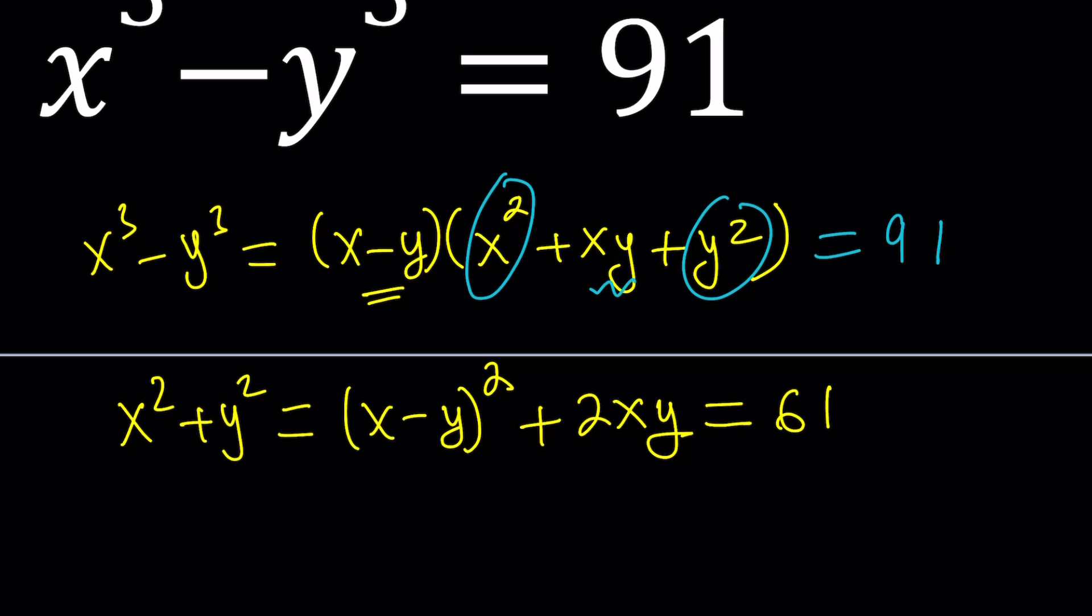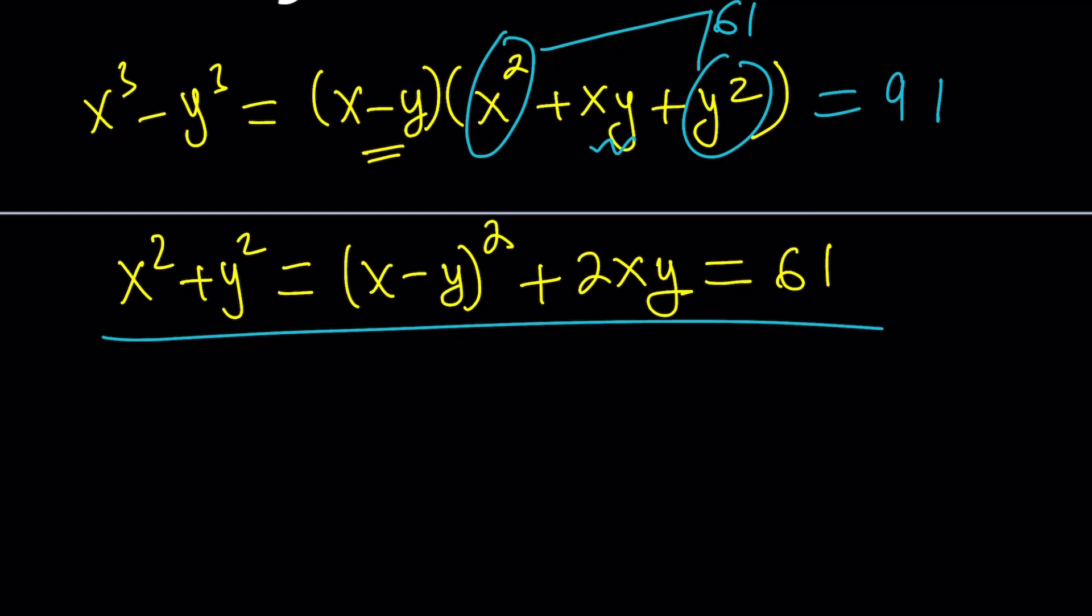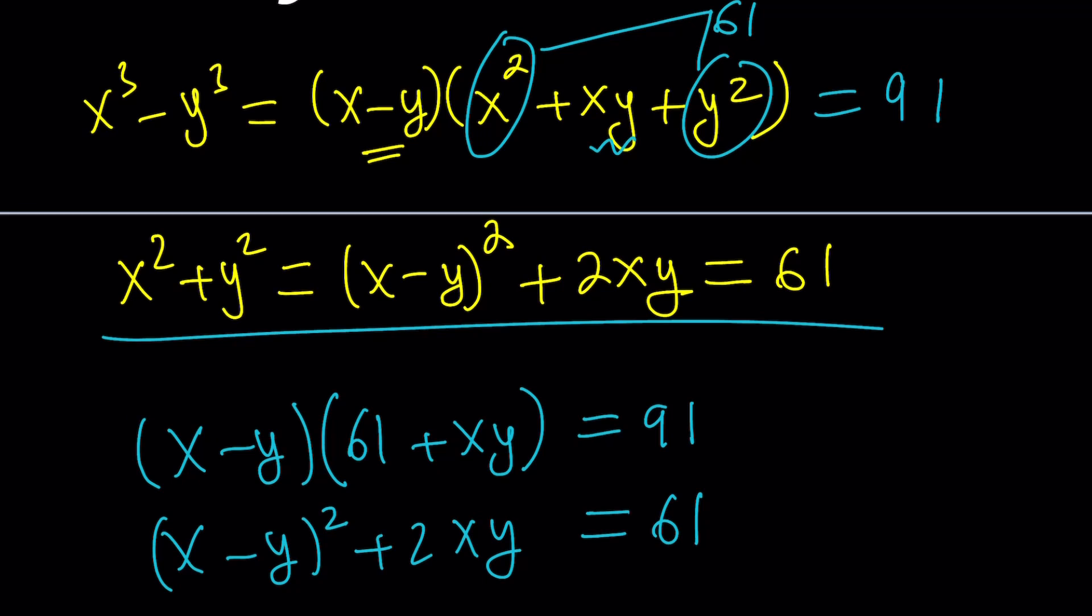Wait. Is x squared plus y squared 61? Yes, it is. So let's go ahead and substitute 61 here, because I already know it. So that gives us something different. Let's go ahead and rewrite our equations. x minus y multiplied by 61 plus xy equals 91. And the second equation says x minus y squared plus 2xy equals 61.